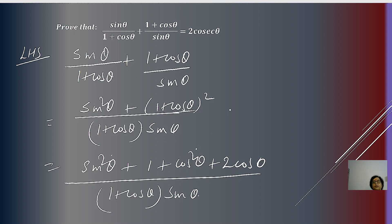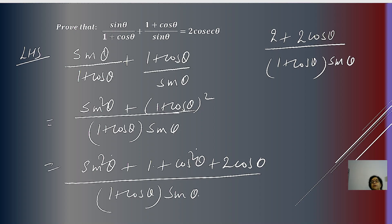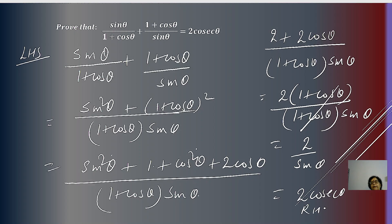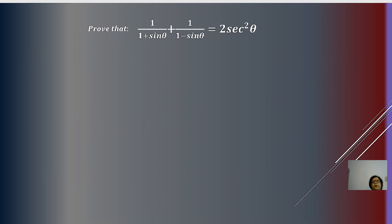Since sin²θ + cos²θ = 1, the numerator becomes 2 + 2cos θ. Taking out 2 as common, we get 2(1 + cos θ) divided by (1 + cos θ)·sin θ. The (1 + cos θ) terms cancel, leaving 2/sin θ, which equals 2cosec θ — the right-hand side. This is how we apply the identity to prove the question.